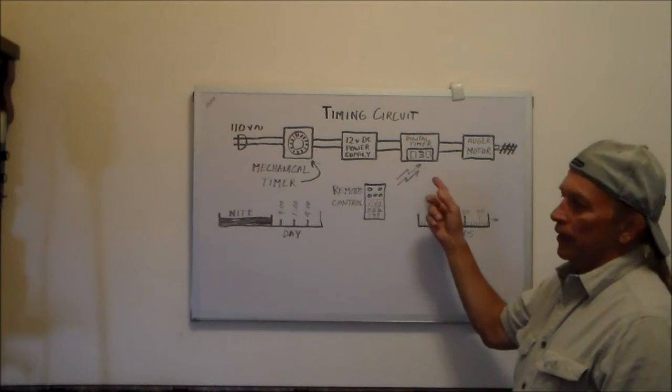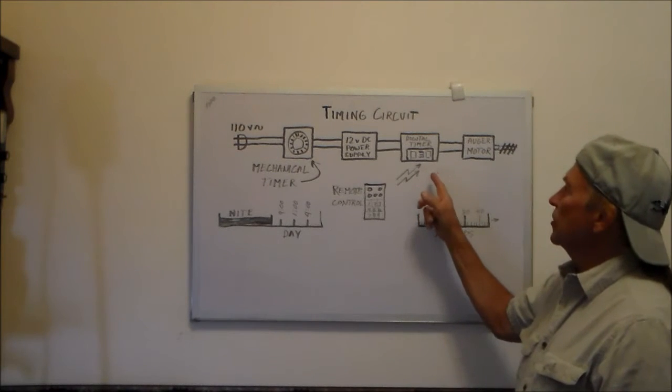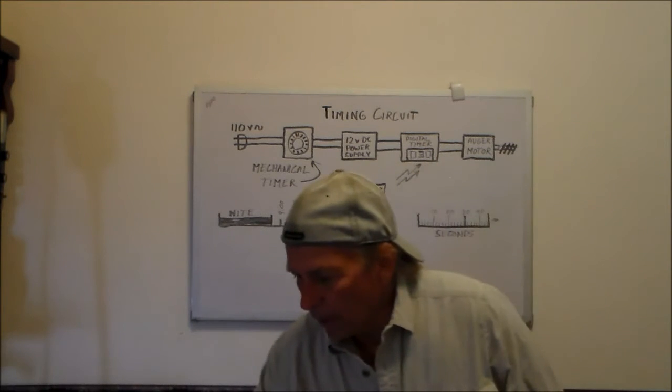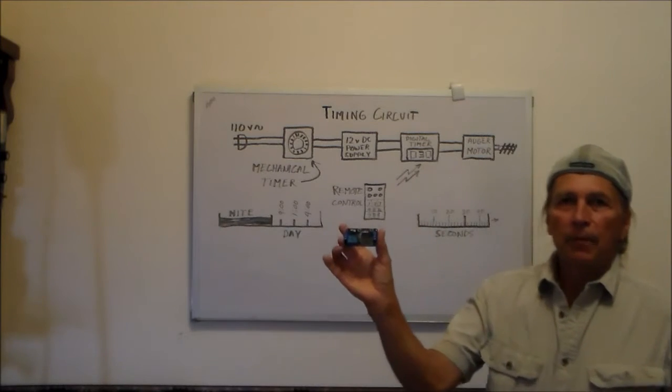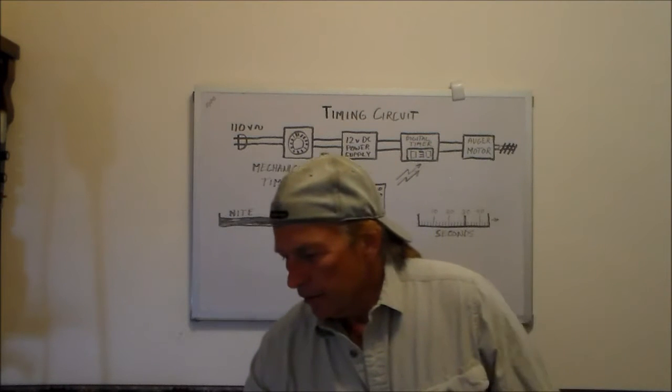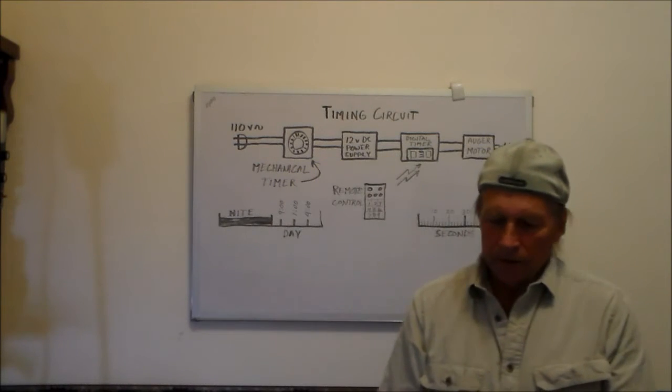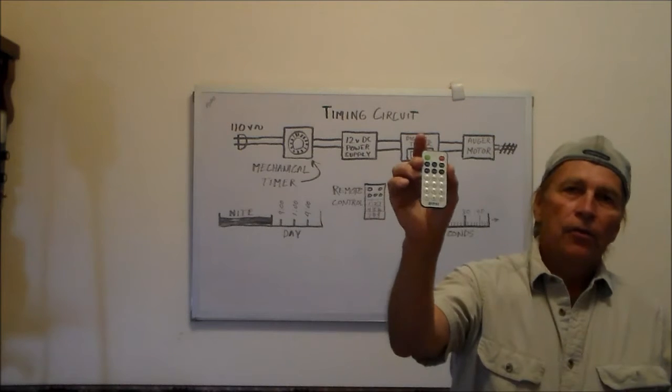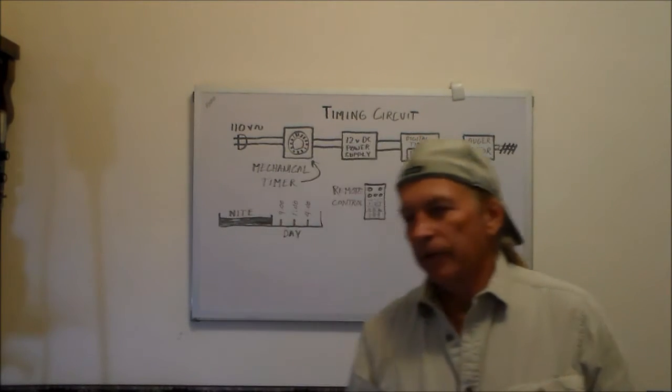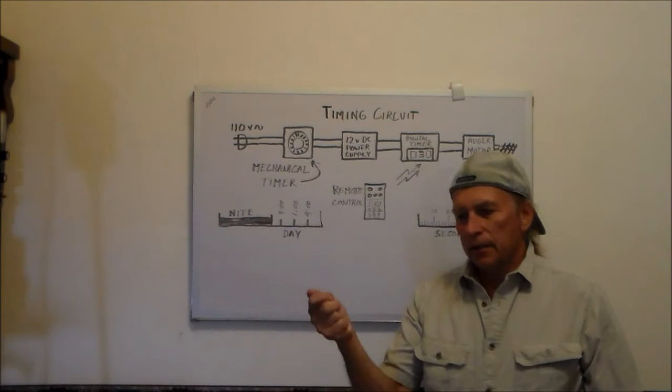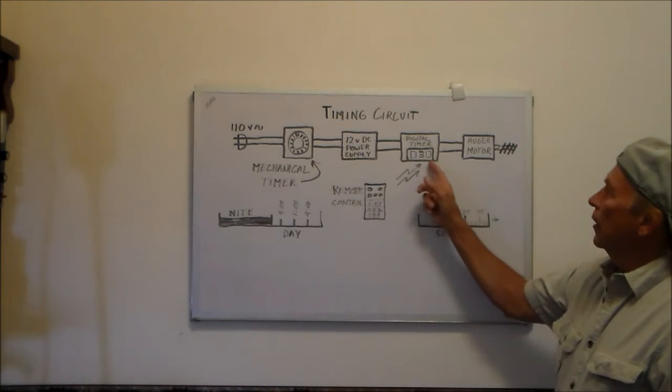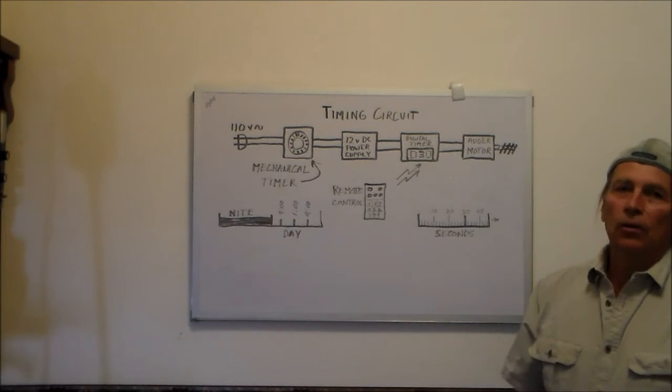The digital timer, there are small units about like this. I bought about three of them. The one that I'm using has a digital remote. I can have the unit mounted up on the wall and use the remote to set the time increment for the amount of time that that auger will be running and putting food into the fish tank.